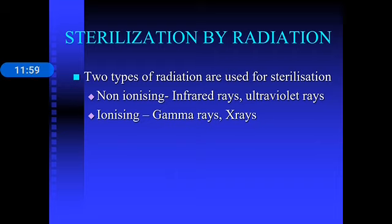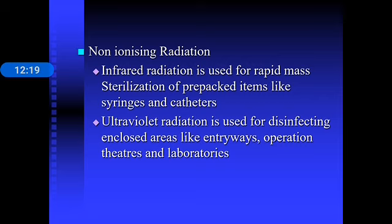Two types of radiation are used for sterilization: non-ionizing radiations such as infrared rays and ultraviolet rays, and ionizing radiations such as gamma rays and X-rays. Non-ionizing radiation is used for rapid mass sterilization of pre-packed items like syringes and catheters. Ultraviolet radiation is used for disinfecting enclosed areas like entryways, operation theatres, and laboratories.